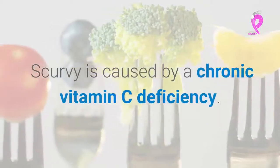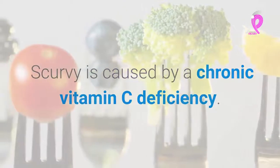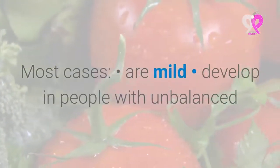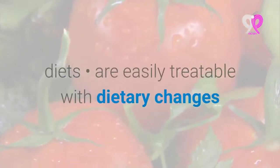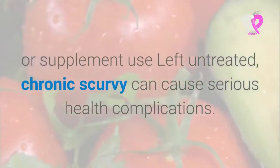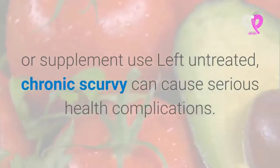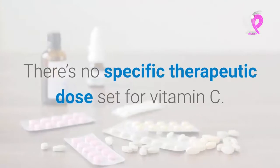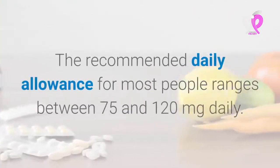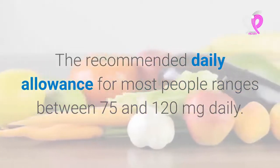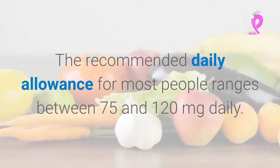Scurvy is caused by chronic vitamin C deficiency. Most cases are mild, develop in people with unbalanced diets, and are easily treatable with dietary changes or supplement use. Left untreated, chronic scurvy can cause serious health complications. The recommended daily allowance for most people ranges between 75 and 120 milligrams daily, though no specific therapeutic dose has been set for severe cases.